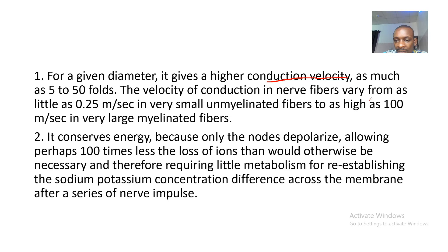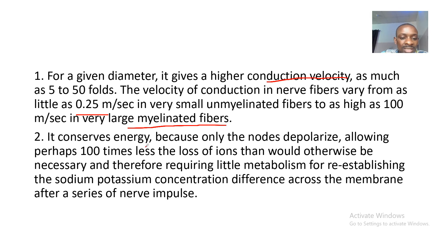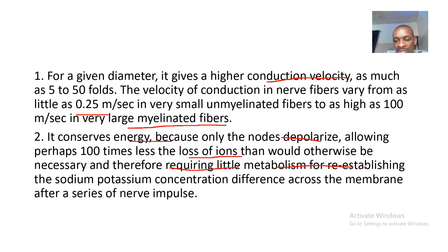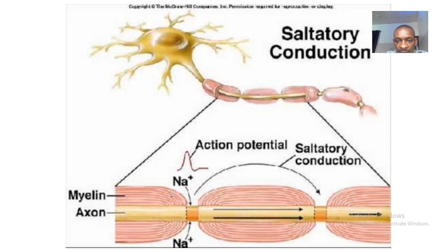The velocity of conduction in nerve fibers varies from as little as 0.2 to 0.25 meters per second in very small unmyelinated fibers, to as high as 100 meters per second in very large myelinated fibers. It also conserves energy because only the nodes depolarize, allowing perhaps 100 times less loss of ions than would otherwise be necessary, and therefore requiring less metabolism for re-establishment of sodium and potassium concentration difference across the membrane after a series of nerve impulses.